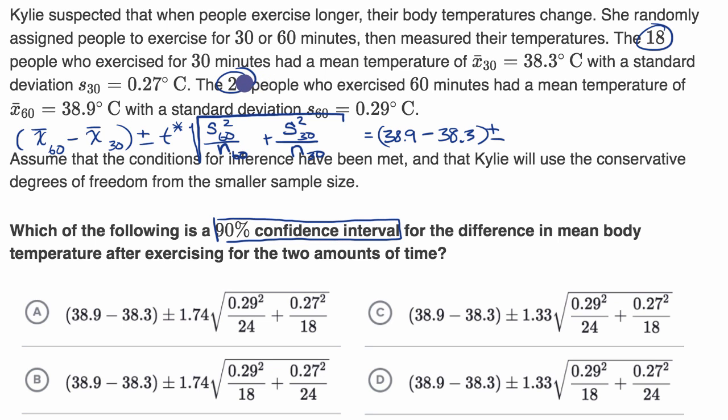whichever is lower, she will use one less than that as her degrees of freedom. 18 is clearly lower than 24, so the degrees of freedom in this situation is 18, or are 18 minus one, so 17. And so using that and that, we can now look this up on a T table.